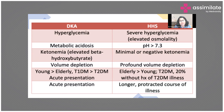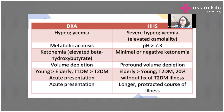HHS presents more in the elderly, mainly because it's more common in type 2 diabetes. Many times a patient may have no past history of type 2 diabetes — it could be the first presentation to the hospital. DKA tends to be a more acute presentation, while HHS sometimes has a slightly more protracted course of illness.